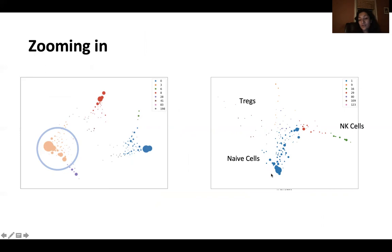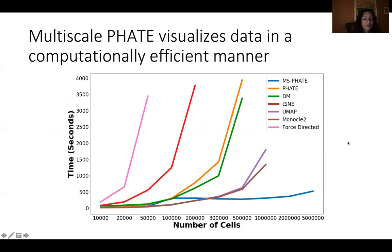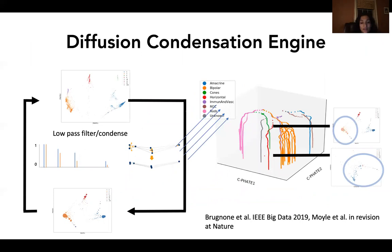And when you zoom in, you see additional structure like naive cells, Tregs, and NK cells. Multiscale FATE is also able to handle the number of cells that we have because we've made it highly efficient in terms of runtime, and you see it's this blue flat curve.